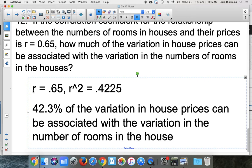So we know that there's variation in house prices and there are lots of things that factor into it. But 42% of that variation can be associated with number of rooms. That's what the coefficient of determination means.